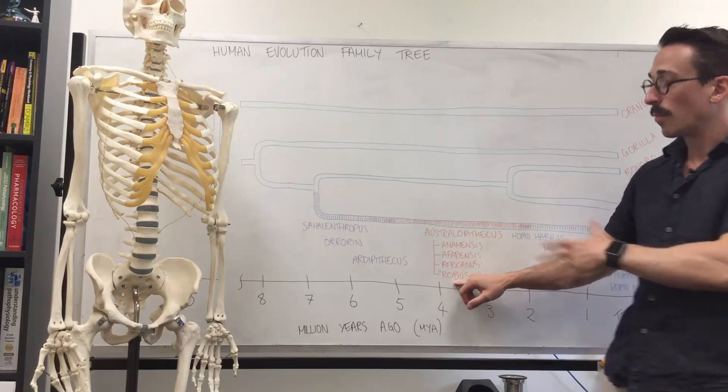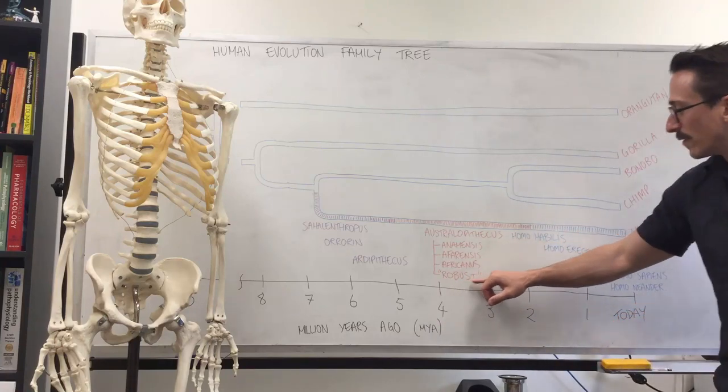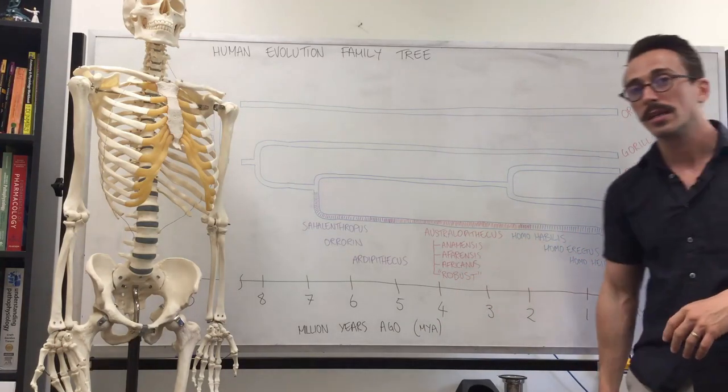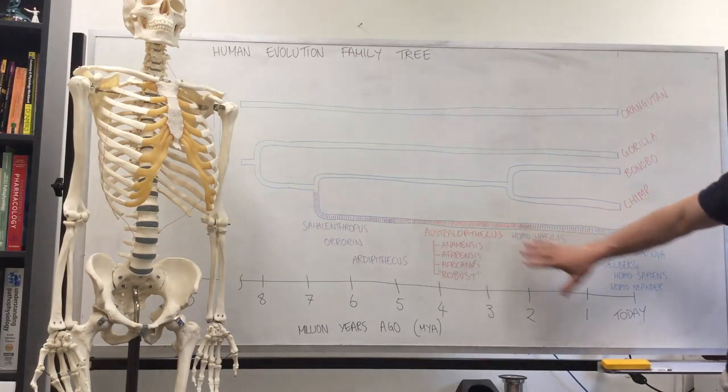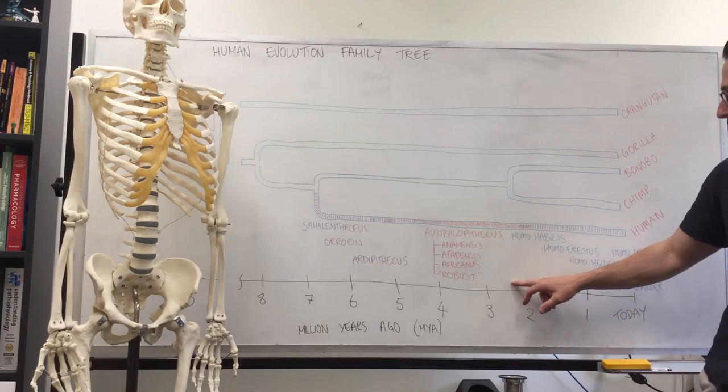Australopithecus, the robust Australopithecus, actually lived well and truly up until around about two million years ago.